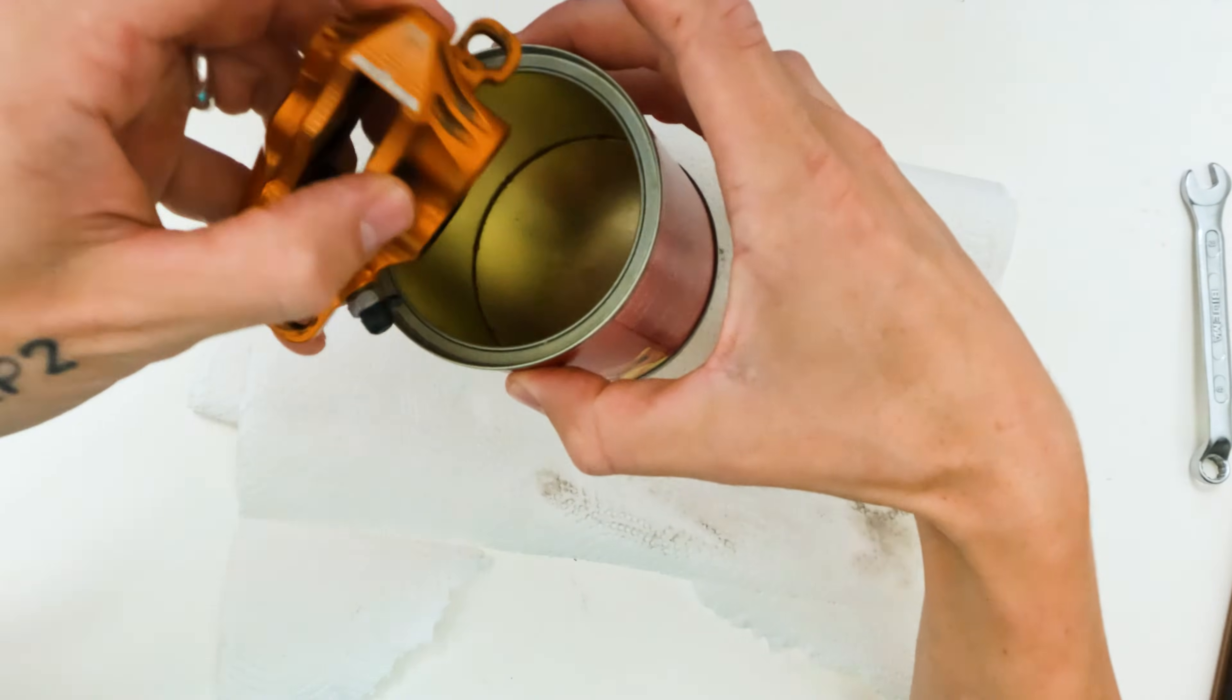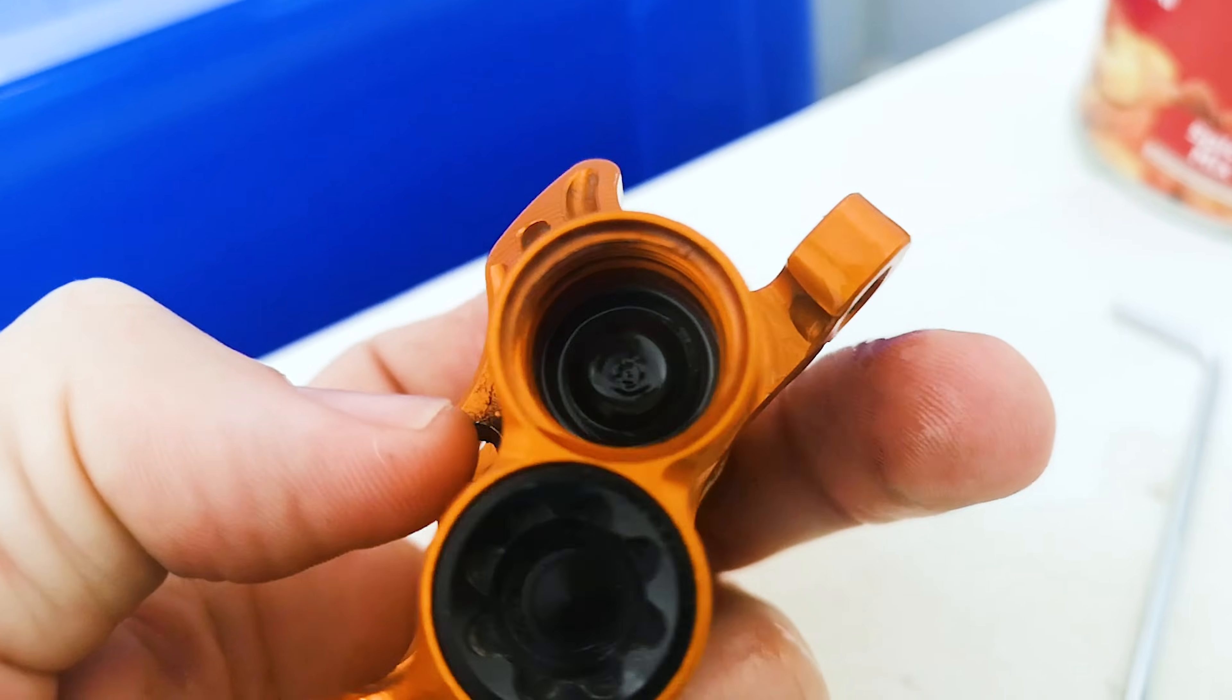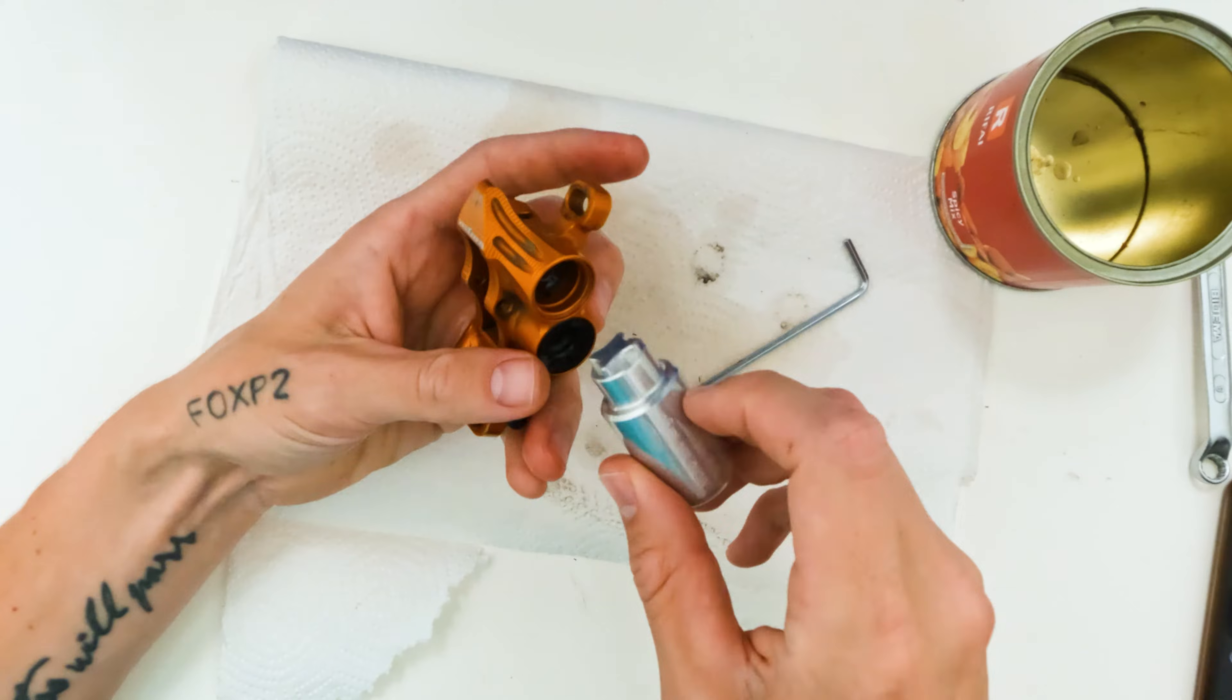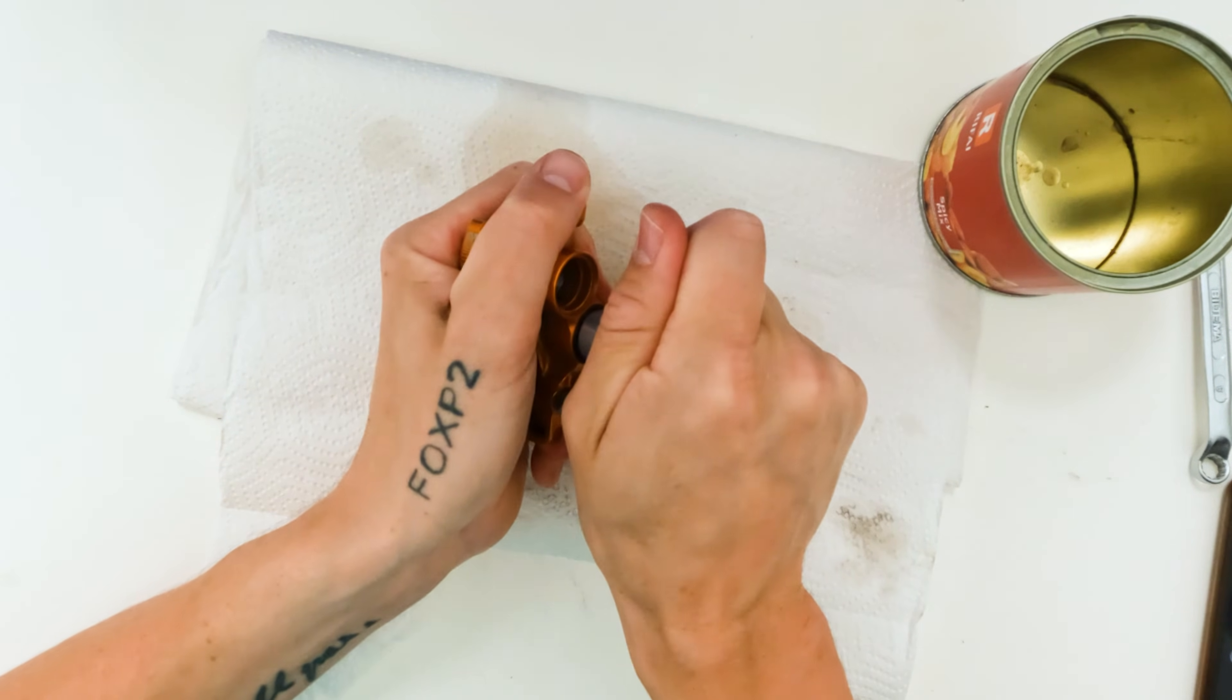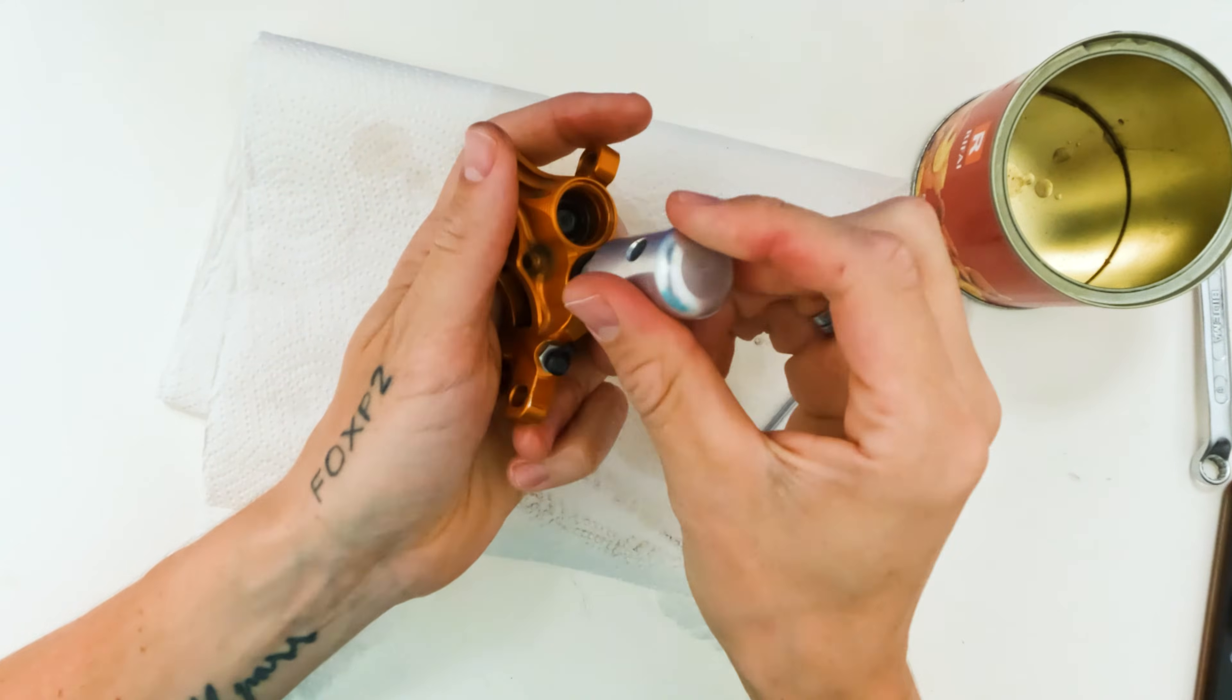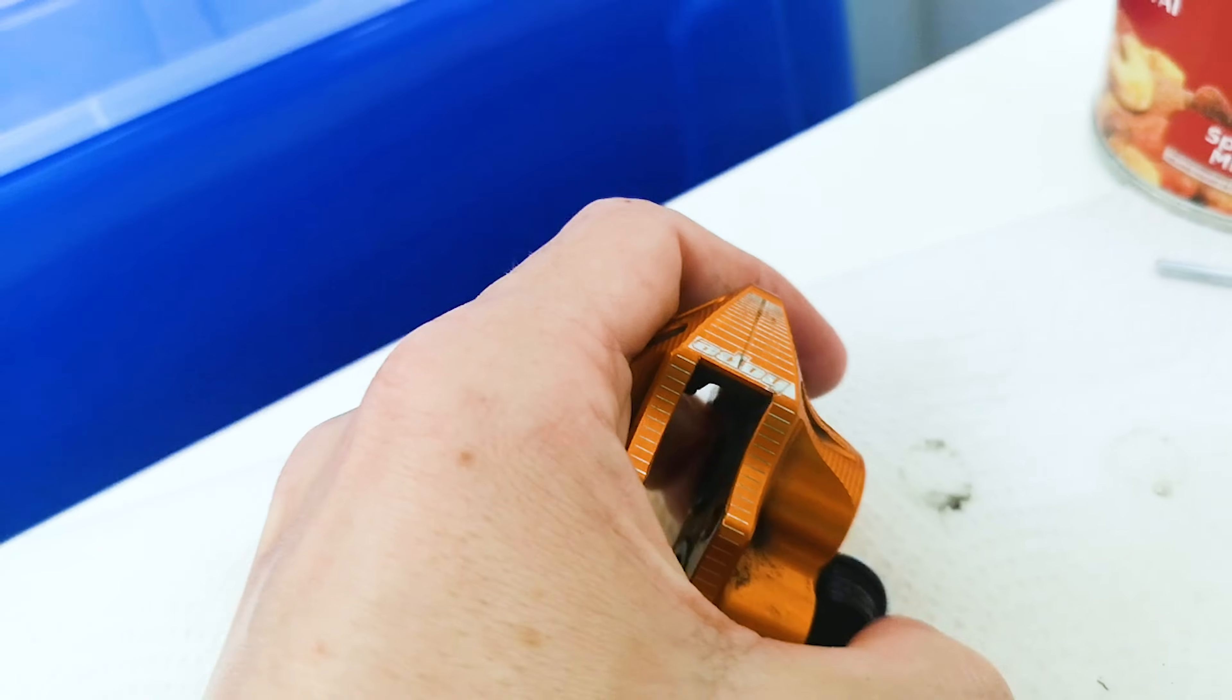I'm just going to pop whatever is in there in this little tin. And now you can just see that piston in there. So same thing for the other side, put a bit of force in it. There we go.